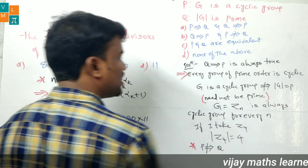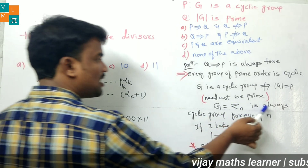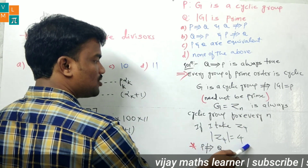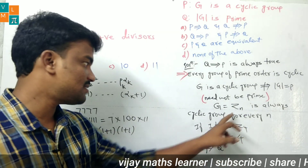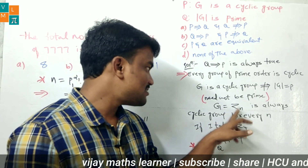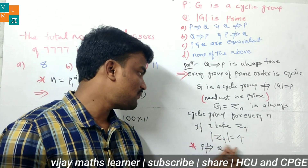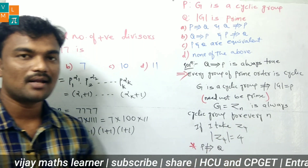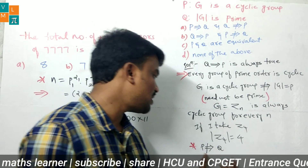G = ℤₙ is always a cyclic group for every n. For example, take ℤ₄: |ℤ₄| = 4, and ℤ₄ is a cyclic group, but the order 4 is not a prime number. So the order of every cyclic group need not be prime. Therefore P does not imply Q.